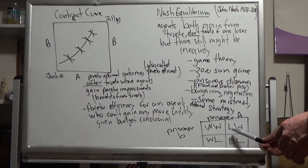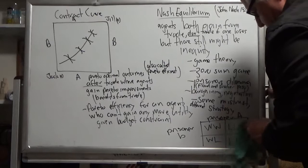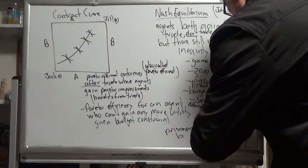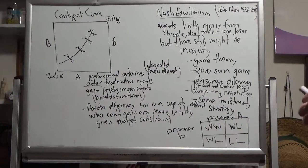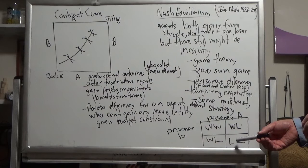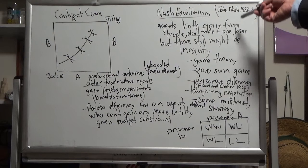What ends up happening is both of them cheat, and both end up losing. They both get long, lengthy sentences because they both cheated on the original agreement, and the whole story is broken down in court. That's some concepts brought forward by Nash.